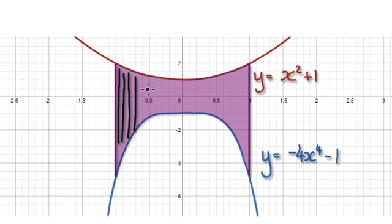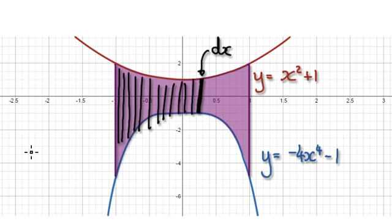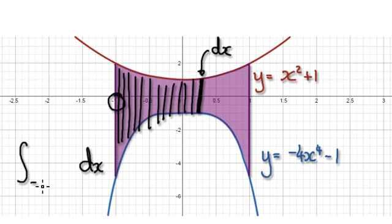To do this, imagine this is your rectangle here. This is the thickness of your rectangle, so the thickness is DX. So your integral will be something DX, but rather than integrating from minus 1 to positive 1...